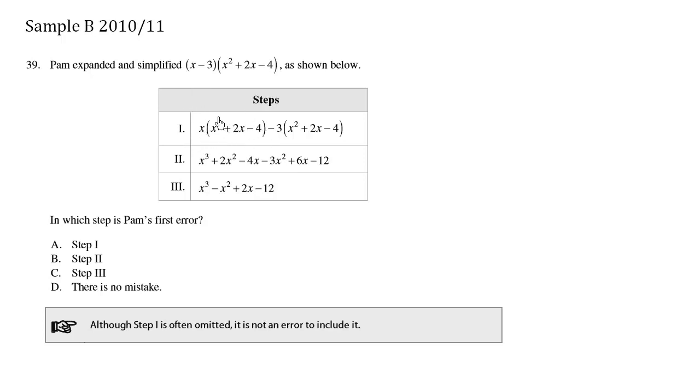We have x times this whole thing here, and then we have negative three times this whole thing here. So essentially we're doing distribution. We're doing this times this and then this times this.